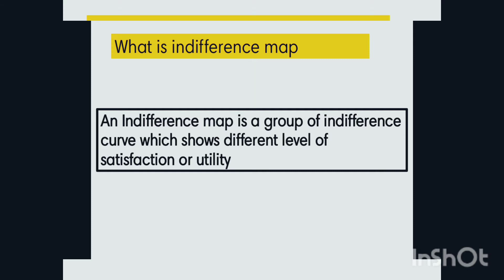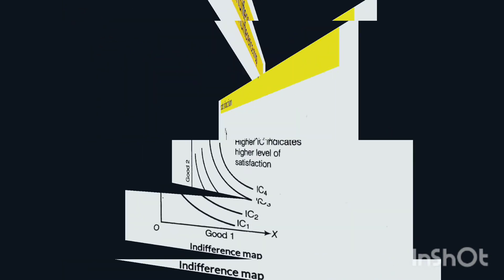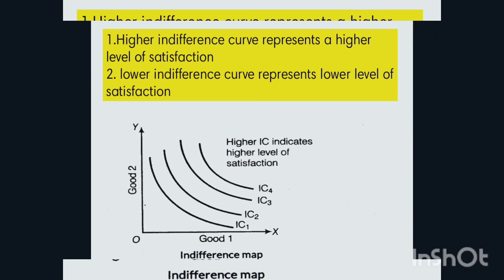A higher indifference curve represents a higher level of satisfaction, and a lower indifference curve represents a lower level of satisfaction. When you see the indifference map, IC3 shows a greater level of satisfaction and IC4 shows a lower level of satisfaction.